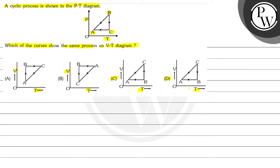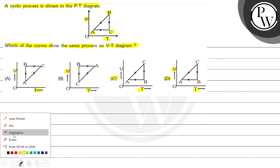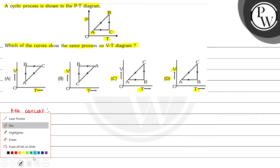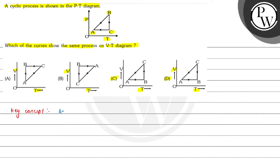Now, according to the ideal gas equation, we can write our key concept: PV = NRT.